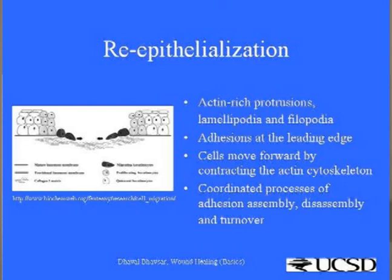For the migration of these keratinocytes, they need a vascular and clean bed equivalent to clean granulation tissue. These epithelial cells migrate with their feet — lamellipodia and filopodia. The forward movement is made possible by an actin-rich cytoskeleton. The coordinated processes of addition, assembly, and disassembly will make them walk over the granulation tissue.